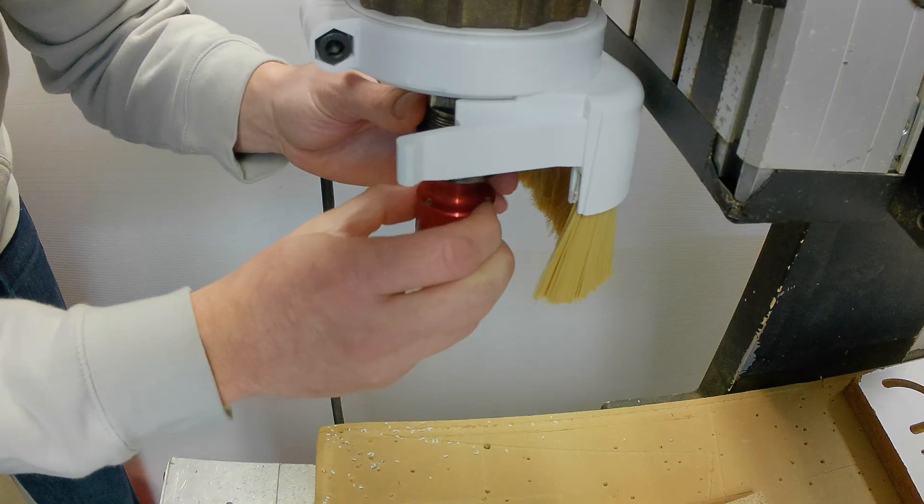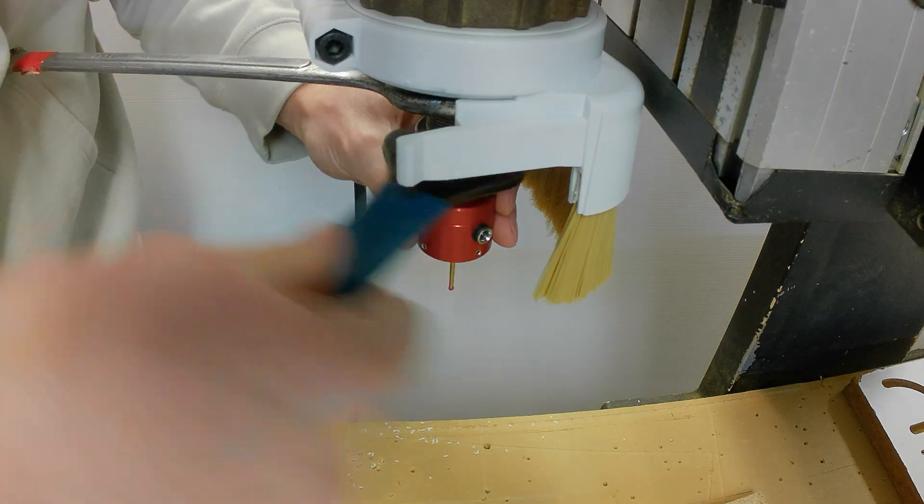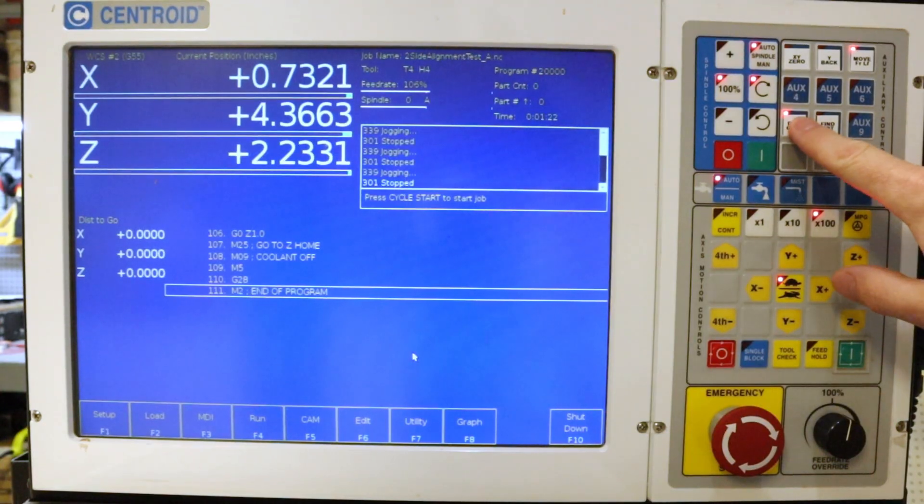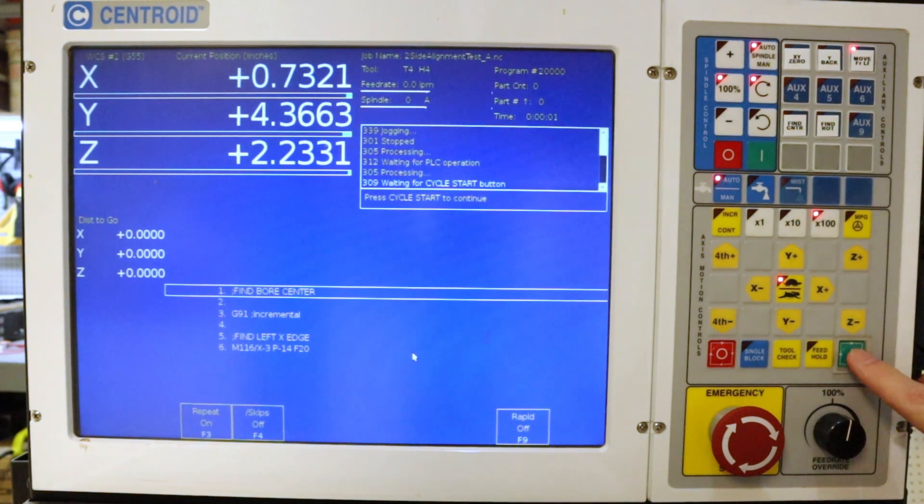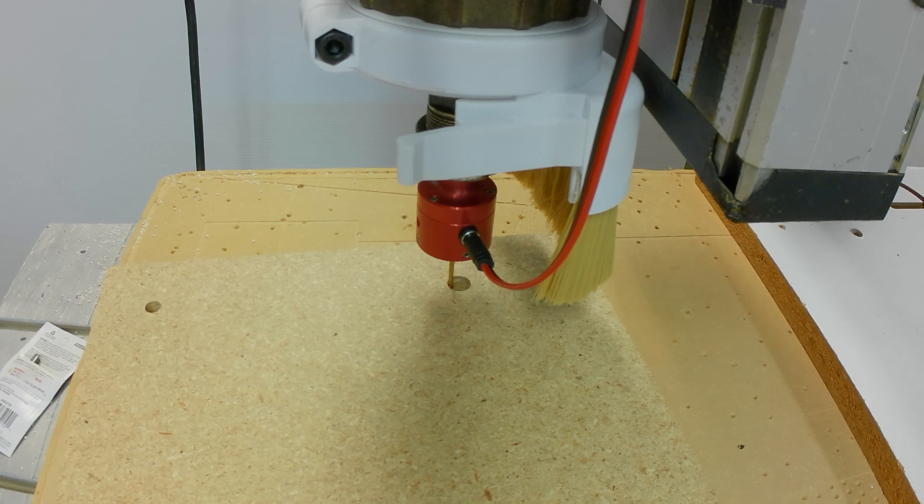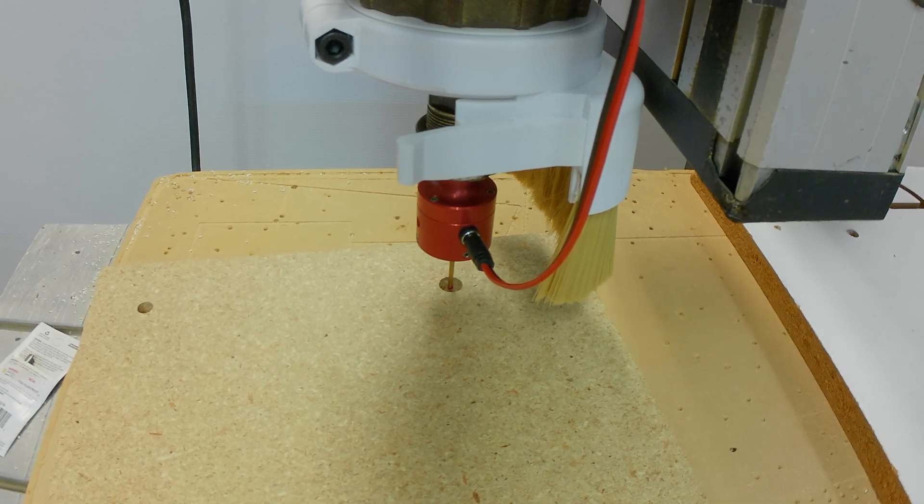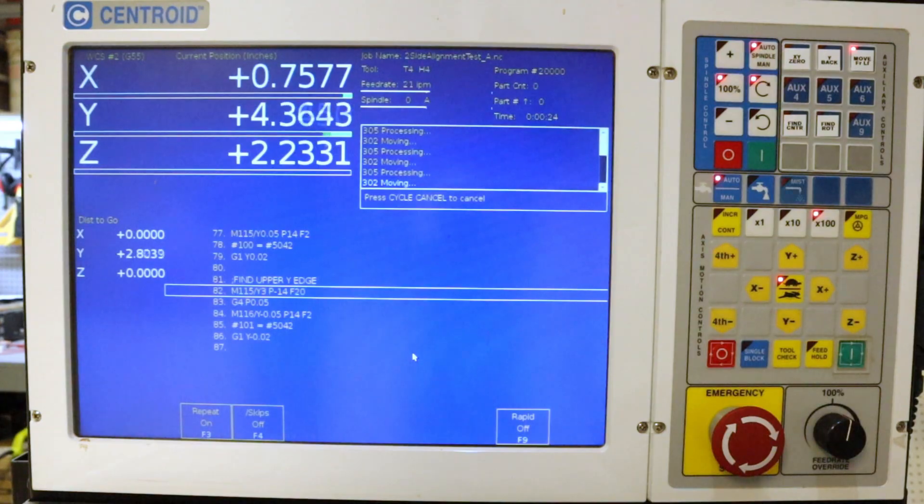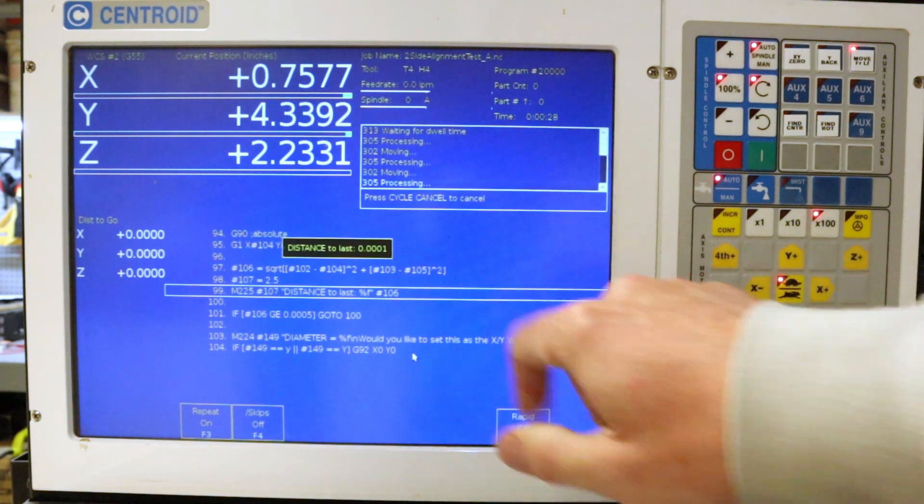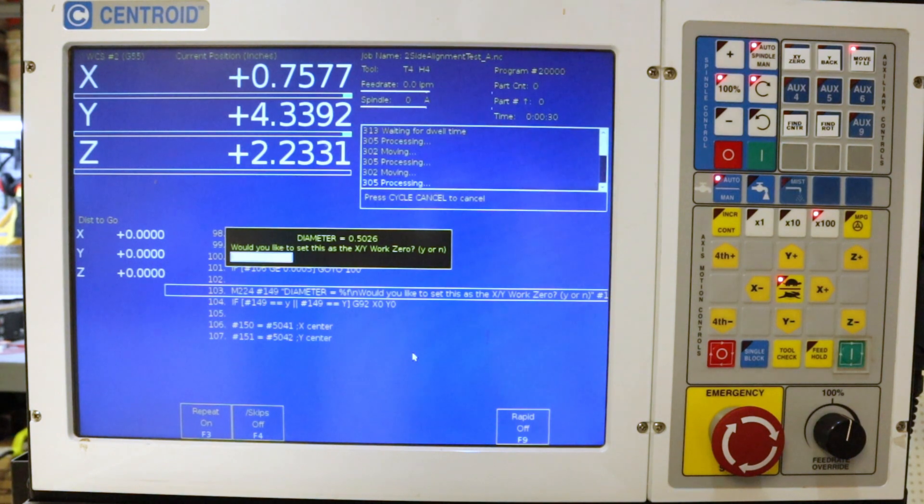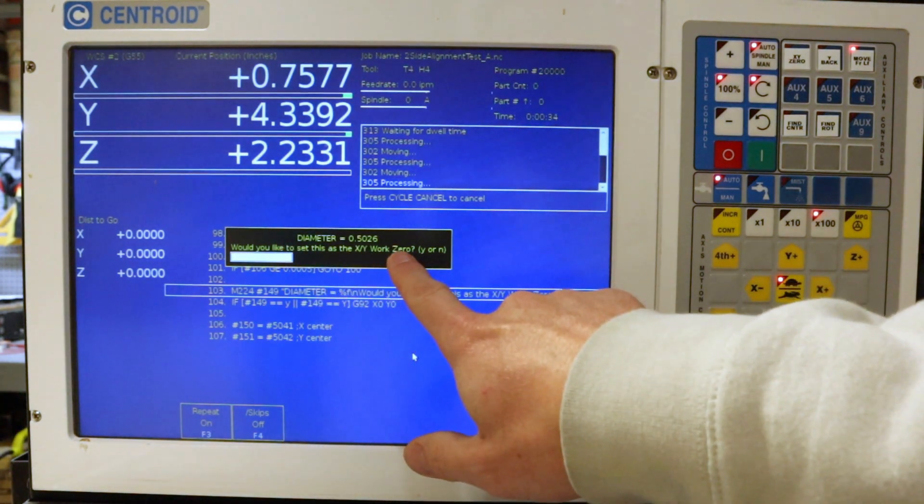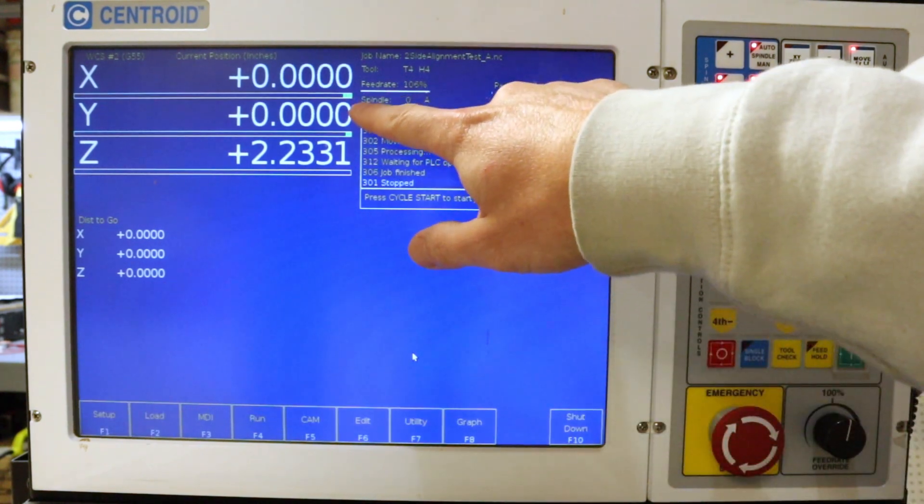I install a touch probe in the spindle and then use a custom G-code macro to find the center of the reference hole. The center finding routine finds the center multiple times and does not stop until the two consecutive reads are less than a half a thousandth apart to ensure the reading has sufficiently converged. The diameter of the hole is also measured for reference. We set the center of that hole to be our origin.